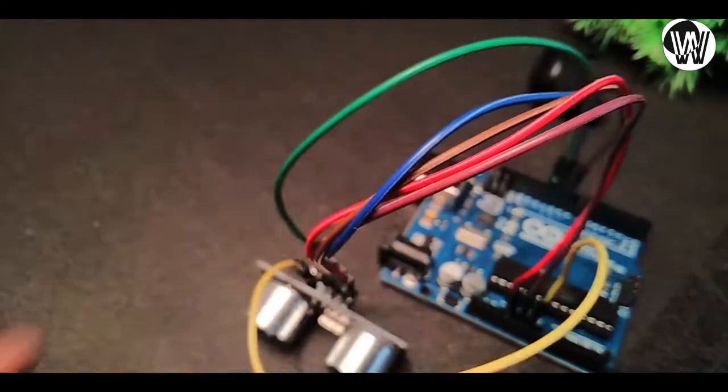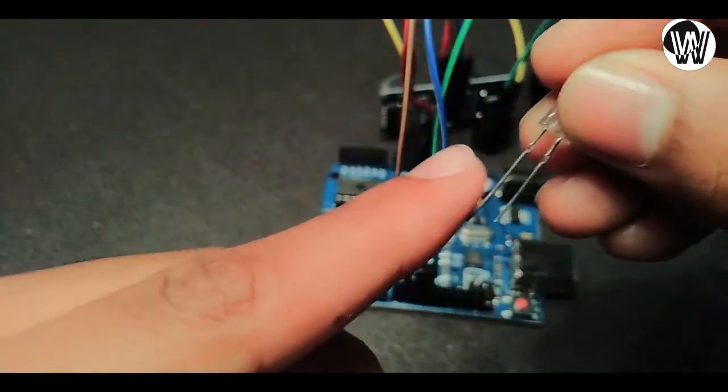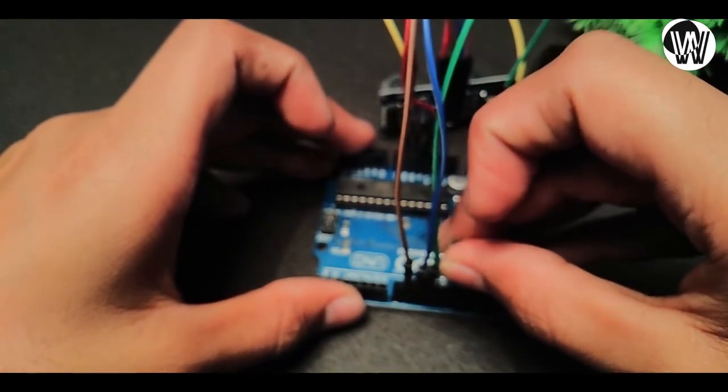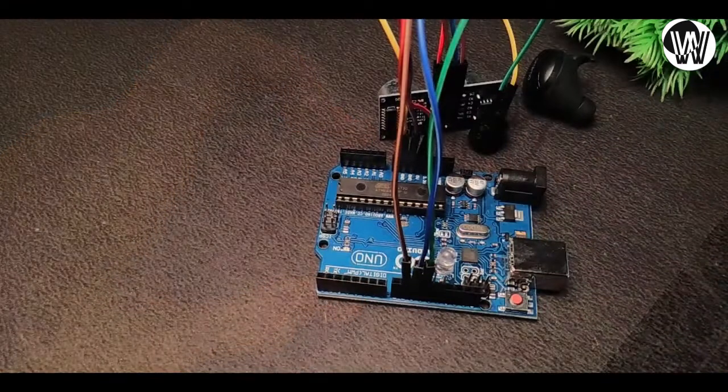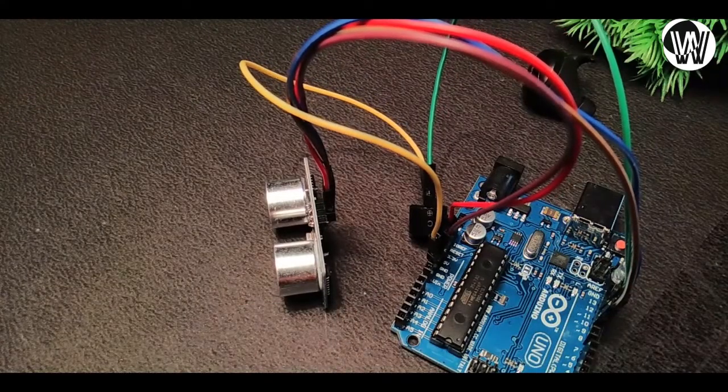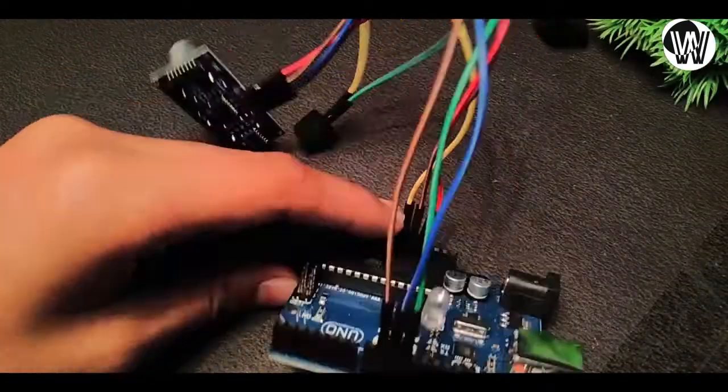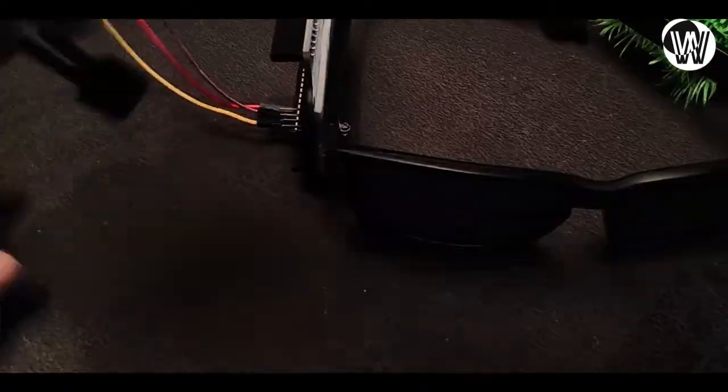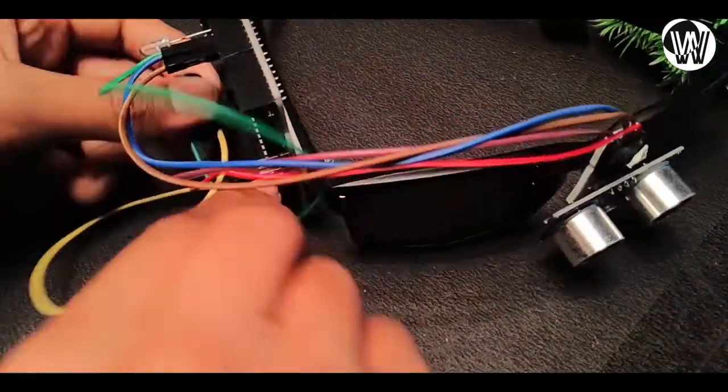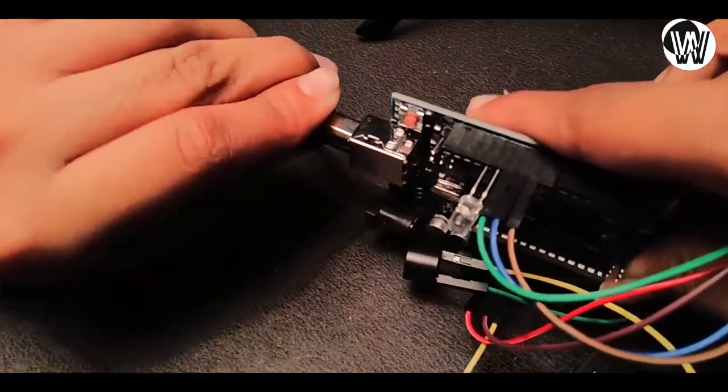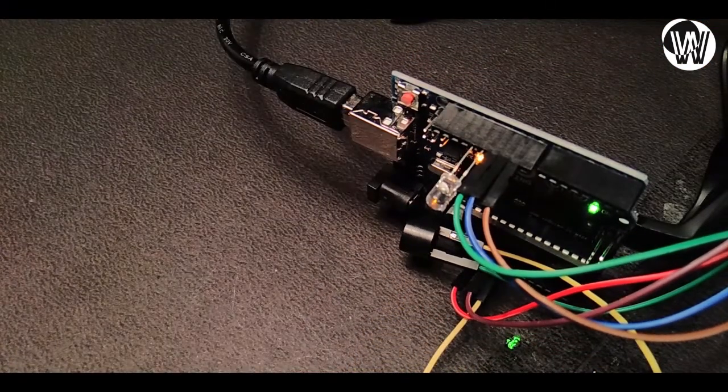Take the LED and connect the positive part of the LED to digital pin 13 and the negative part to the ground of the Arduino board. Now the circuit is completed and we can install it to the spectacles. Now connect Arduino to the PC and we can code it.